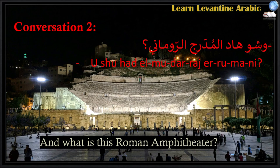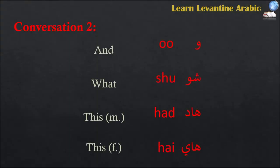وشو هاد المدرج الروماني؟ — and what is this Roman amphitheater? و means 'and,' شو means 'what,' هاد means 'this' referring to a masculine noun. Remember, هاي is 'this' when referring to a feminine noun.